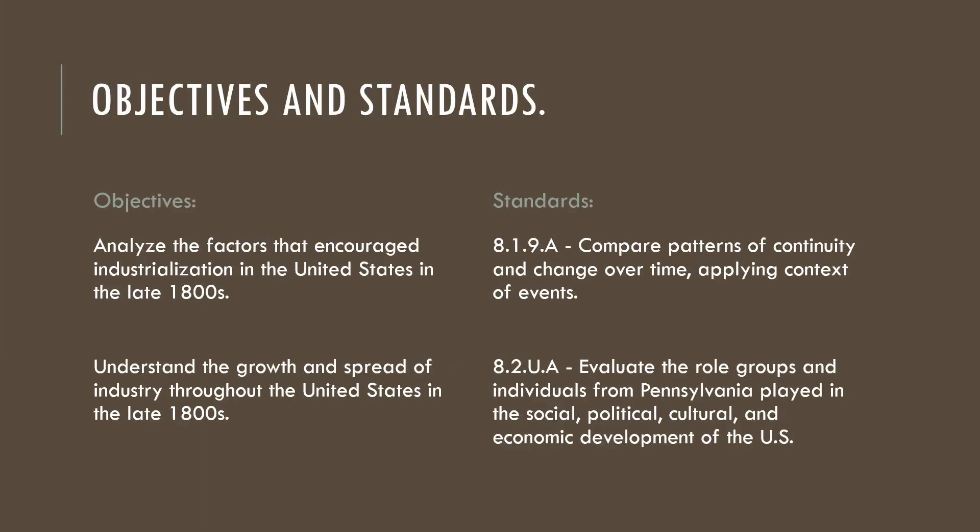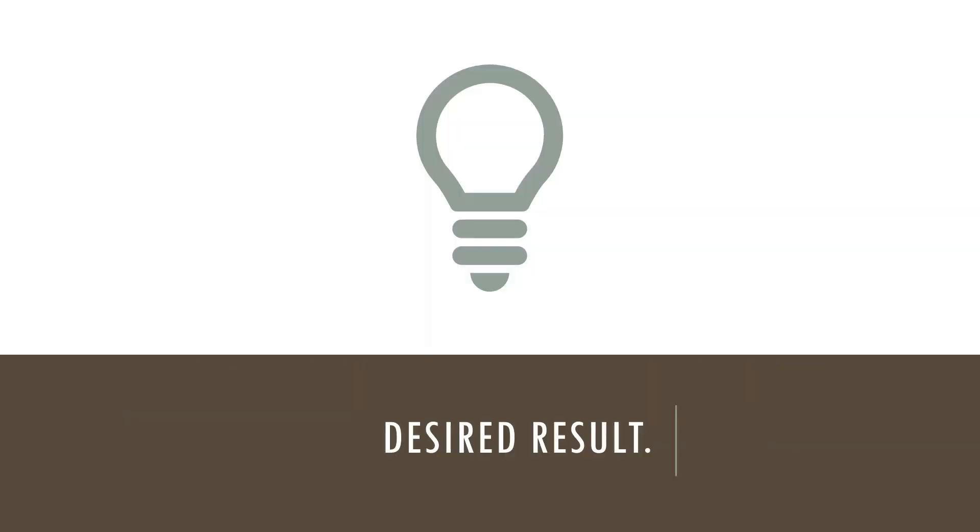Our objectives and standards are to analyze the factors that encouraged industrialization in the United States in the late 1800s, and to understand the growth and spread of industry throughout the United States in the late 1800s. Our desired result: How did the second Industrial Revolution begin in the United States?